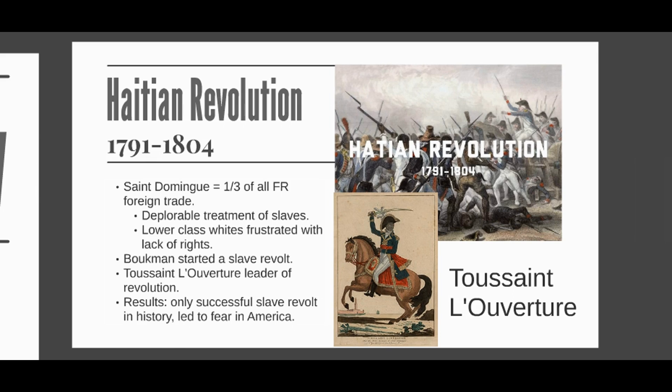By 1801, his army controlled most of the island, and he supported a new constitution that granted equality to all and declared Toussaint L'Ouverture governor for life. Initially, some of the radical French revolutionaries supported the rebels with their Enlightenment ideals, but Napoleon did not.